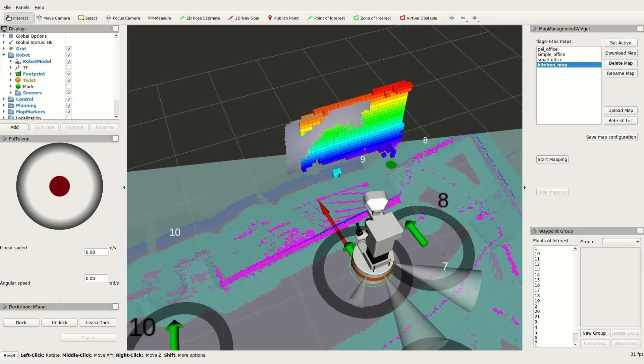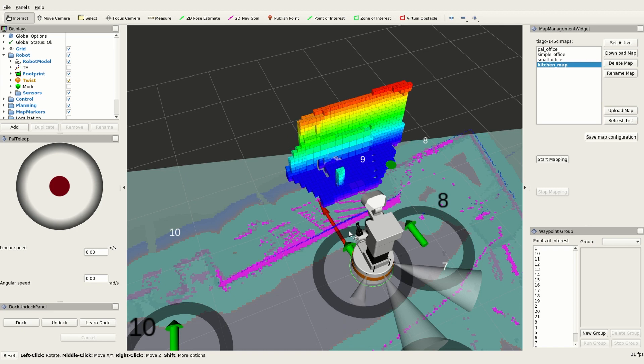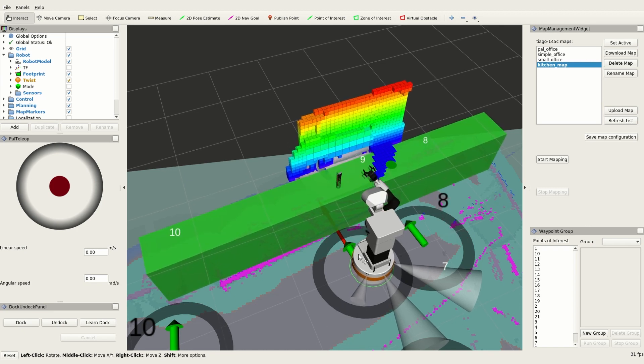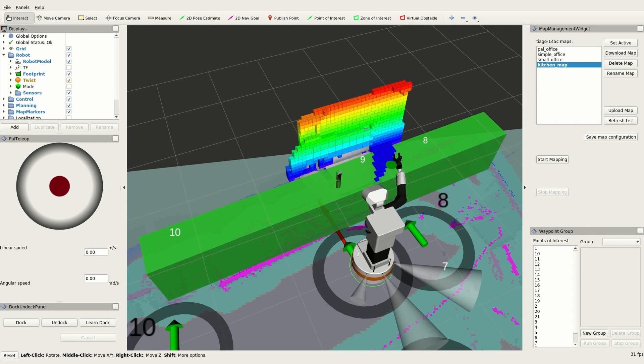The digital twin of the Tiago robot can be visualized simultaneously to the execution of the task. Using OctoMap, Tiago maps the environment in order to avoid collision during planning.